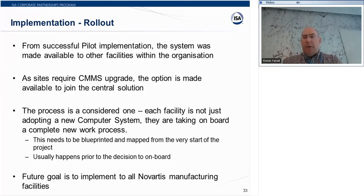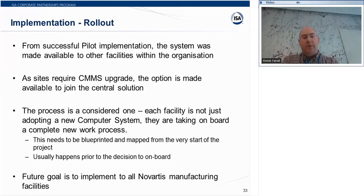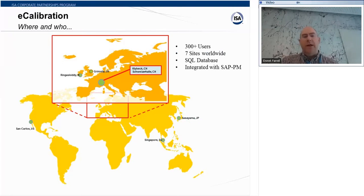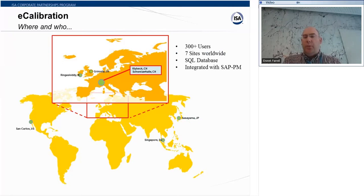Pekka mentioned including users early as a key takeaway, and I would echo that as well — include your users as early as possible and use them to be a positive force for the change when they bring in the system. We haven't rolled out to all of our sites, but we have a solid platform from which to springboard forward to additional sites. At present for our e-calibration system, we have more than 300 users on the system and are in use in seven different facilities across the world — from the west coast of the United States to Japan — and we have several sites in Europe as well.